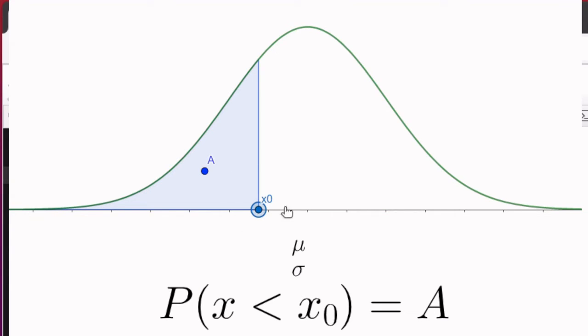If the x0 value is known and we want to find the a value, that's called a probability problem. On the other hand, if the area is known and we're looking to find that x value, then that's called an inverse problem.